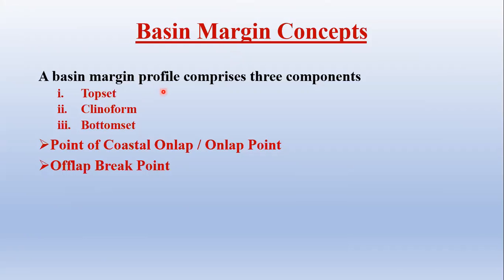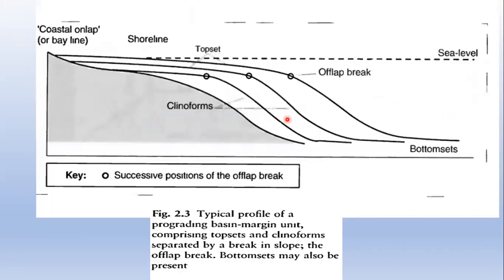A basin margin profile comprises three components: topset, clinoform, and bottomset. The topset is the proximal portion of the basin margin profile, characterized by low gradient of less than one degree. It appears generally flat on seismic data and contains alluvial, deltaic, and shallow marine depositional systems.